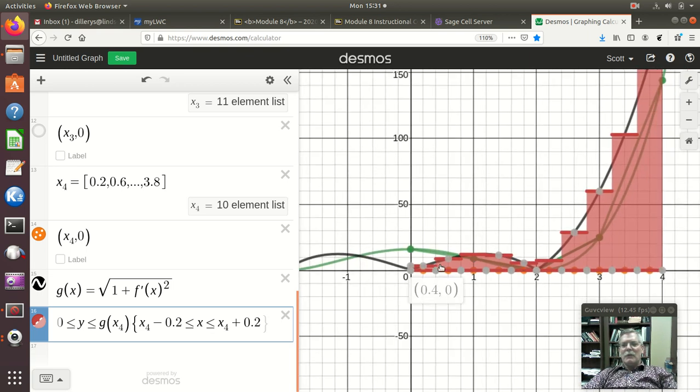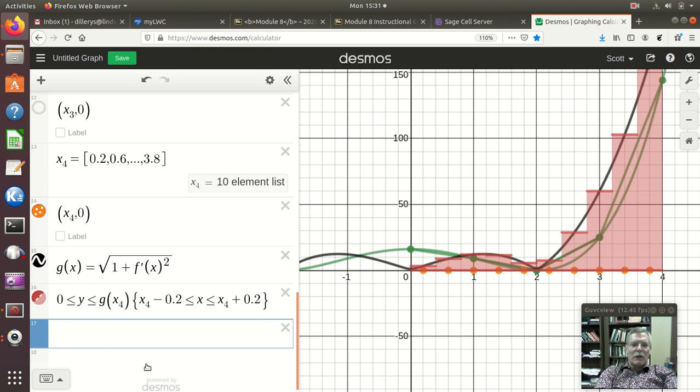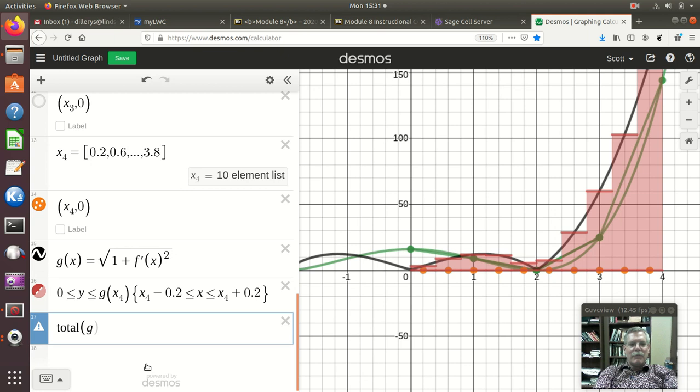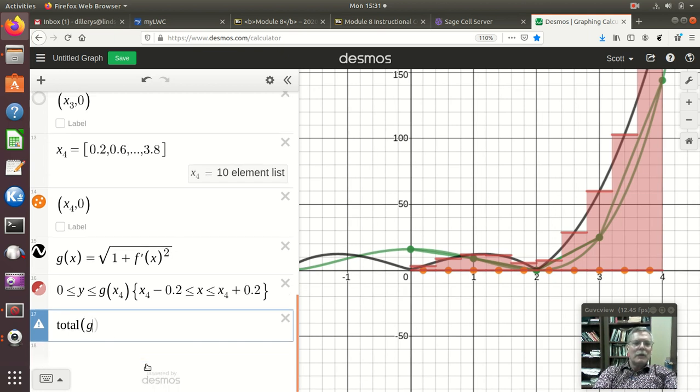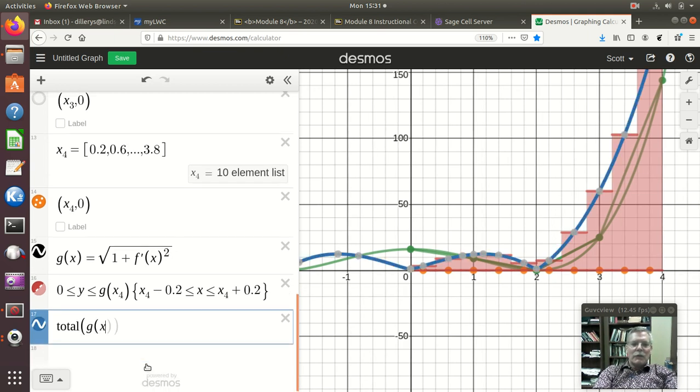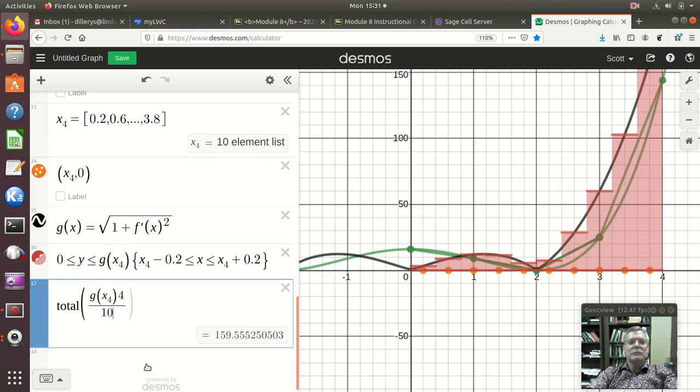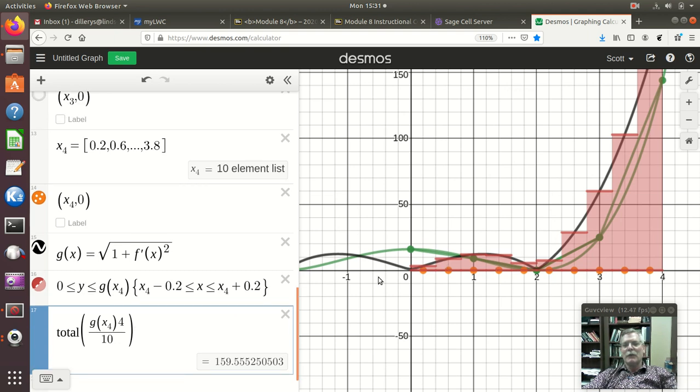Okay, so, it's going to add up the areas of all those rectangles. If, what I do then is take my total of G of X4 times my delta X. So, 4 divided by 10. And, I get a good number. 159.55. Not actually as good as the 4 straight lines. But, I can do that.